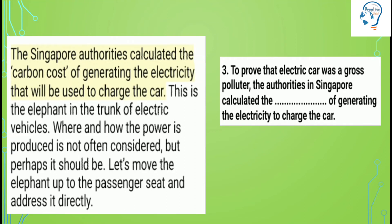Here is an example for you. See what is written in the paragraph: 'The Singapore authorities calculated the carbon cost of generating the electricity that will be used to charge the car. This is the elephant in the trunk of electric vehicles — where and how the power is produced is not often considered, but perhaps it should be.' I noted the topic sentence and understood it is talking about Singapore authorities. I underlined 'carbon cost' and 'Singapore' as key terms.